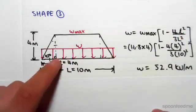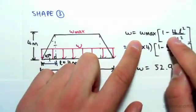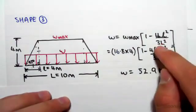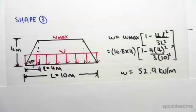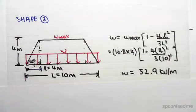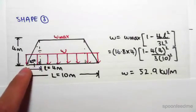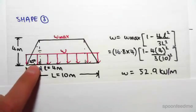The formula for a trapezium to work out the equivalent UDL is W equals W max times one minus four little l squared over three big L squared. Now big L is the total span of ten meters. Little l is the distance from the corner to where it hits W max, so this distance from there to there.